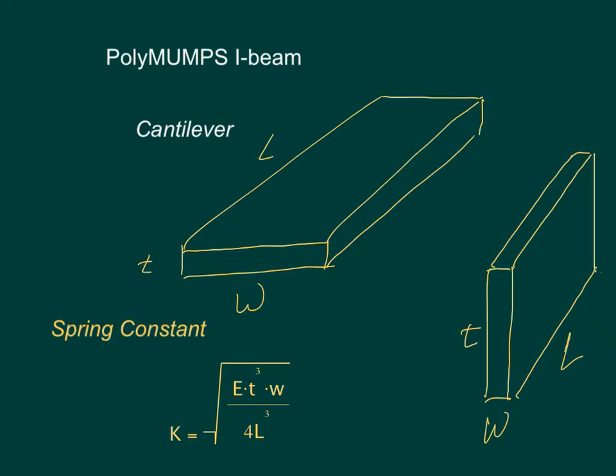So if we go back to the cantilever as a basic structure, and we do that often in PolyMUMPS, if we attach it on both ends it becomes a beam or a bridge, and if we attach it on one end we call it a cantilever.